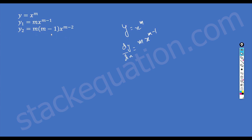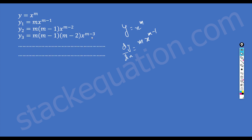Now again we repeat it to find the third derivative. Since m·(m-1) is a constant, it stays, and m minus 2 comes to the front, then we subtract 1 from m minus 2, which gives us m minus 3. And so on — we can observe a pattern here.